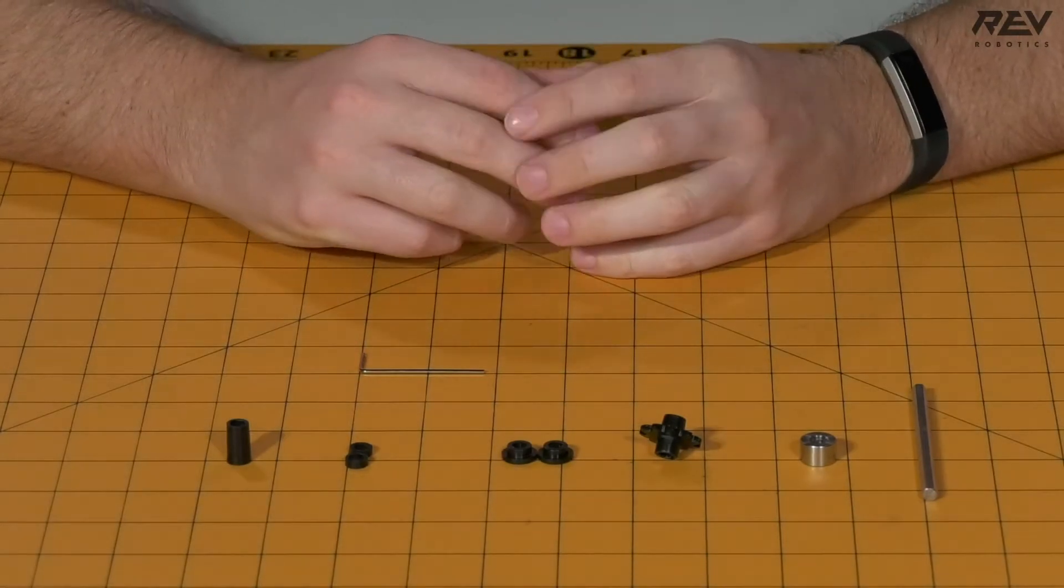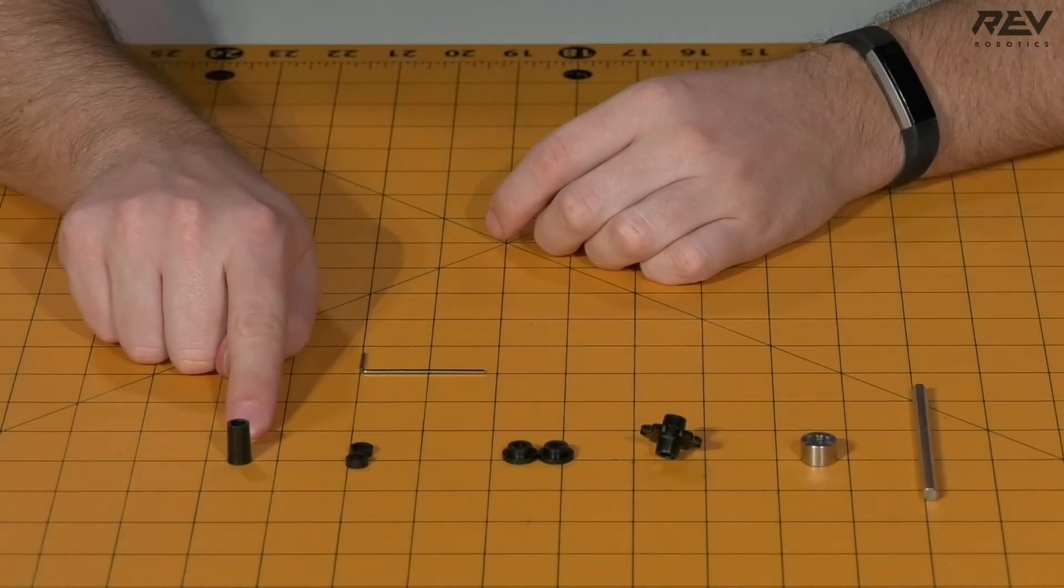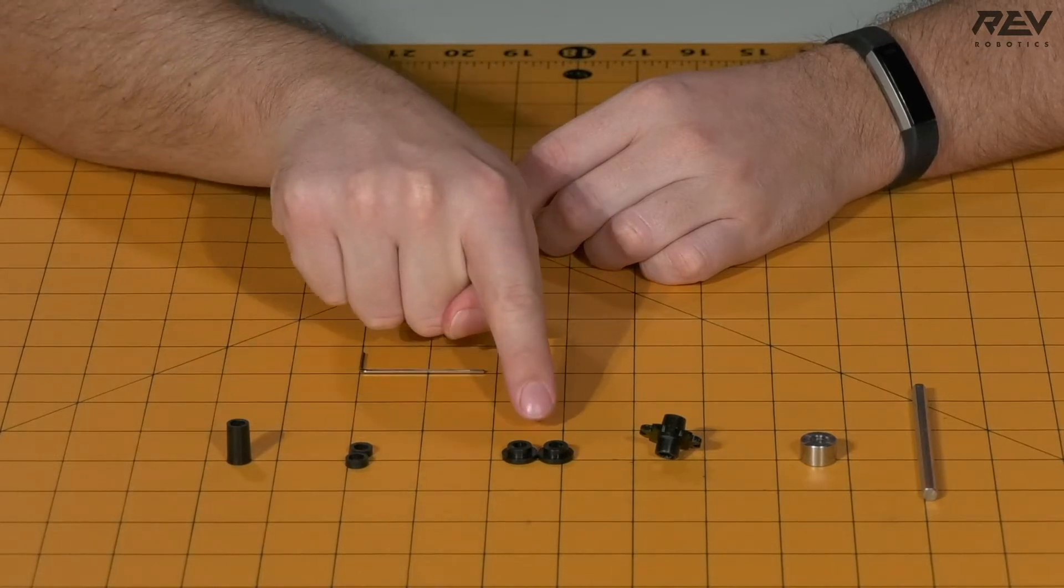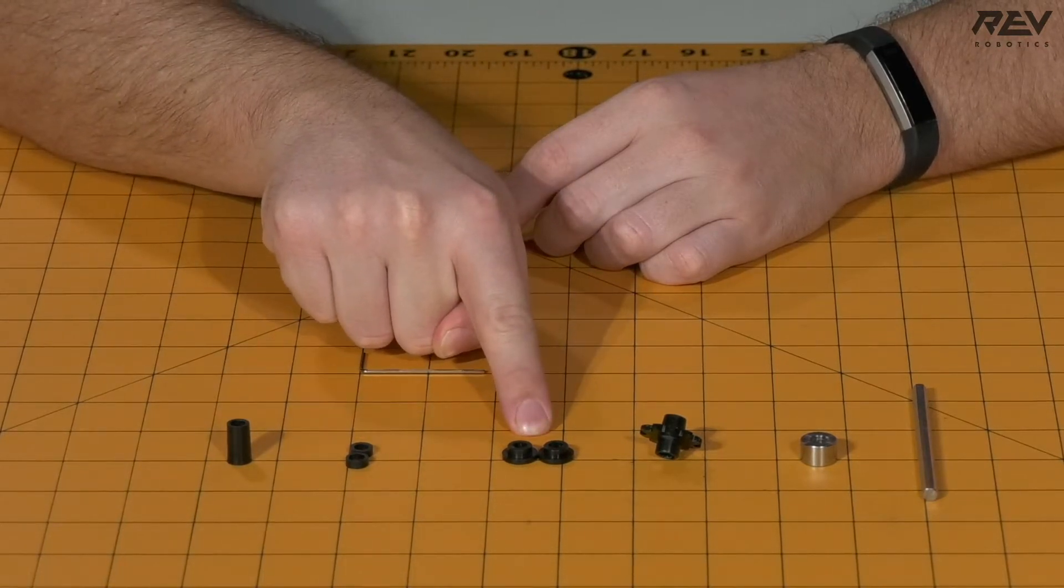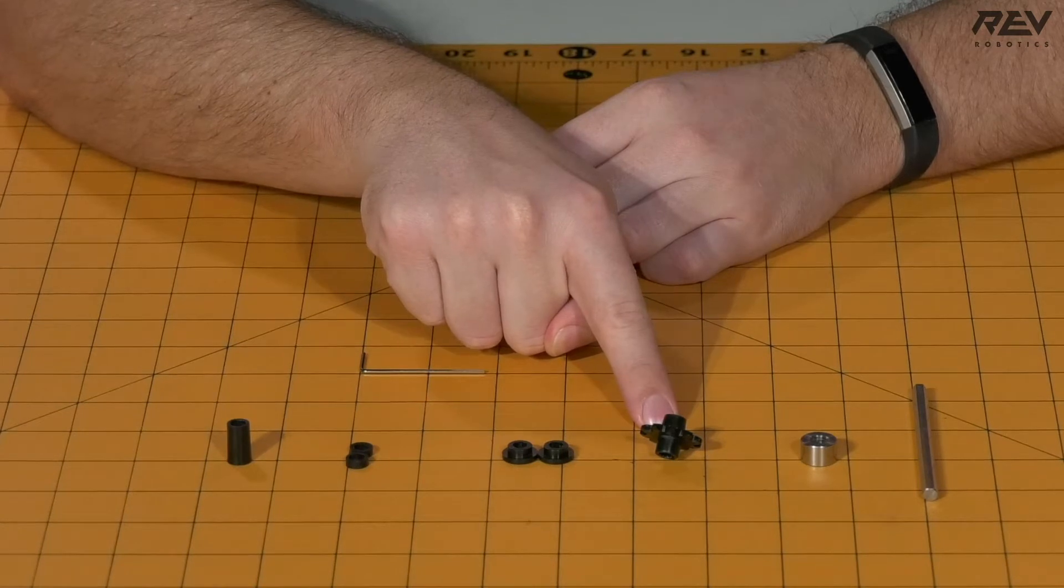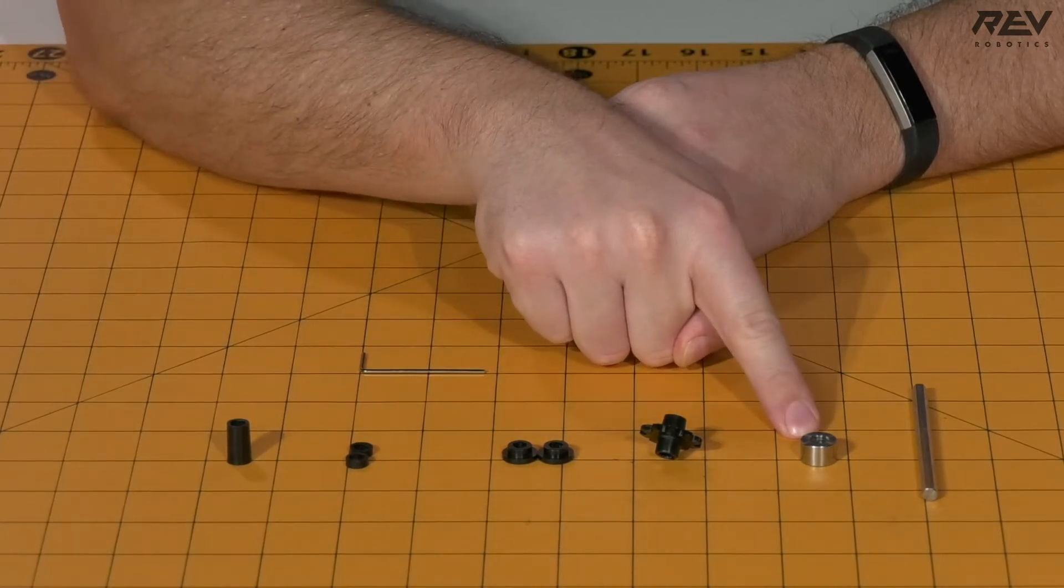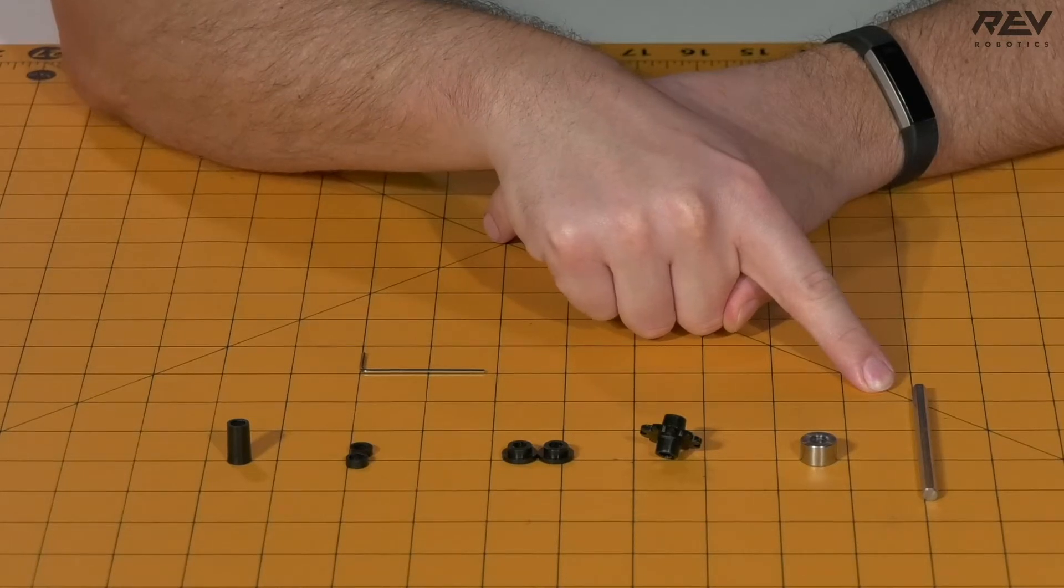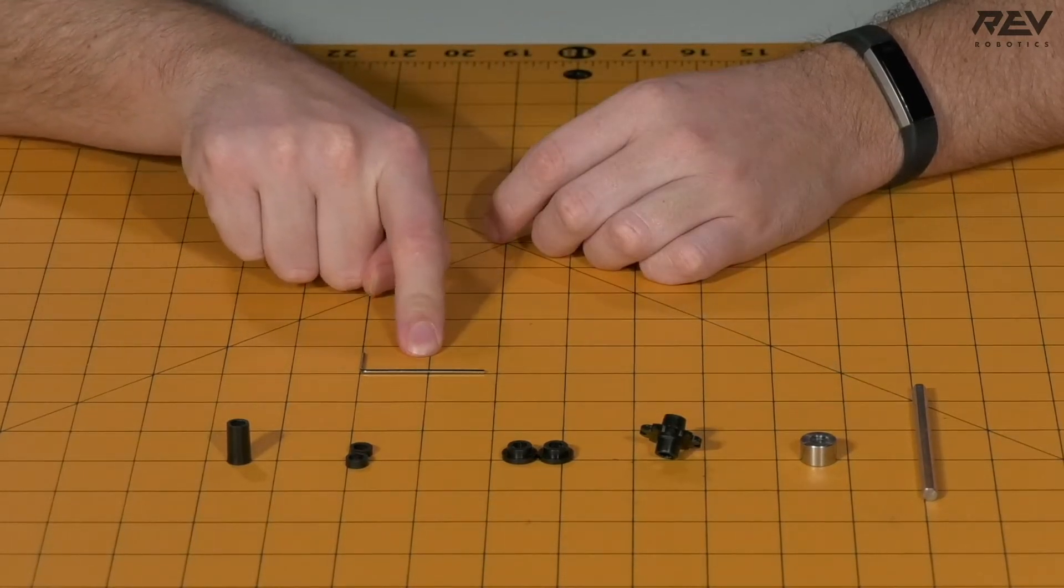We are building the 90 millimeter single sprocket shaft assembly. For this step you will need one 15 millimeter spacer, two 3 millimeter spacers, two short through-bore bearings, one 10 tooth number 25 sprocket, a shaft collar, a 90 millimeter length of 5 millimeter hex shaft, and a 1.5 millimeter Allen wrench.